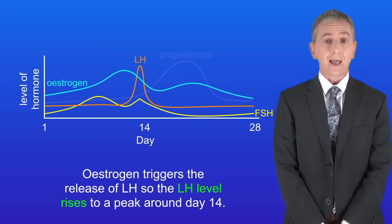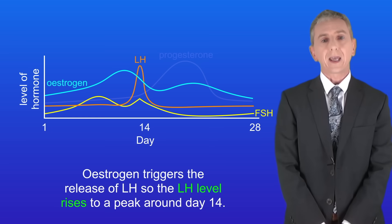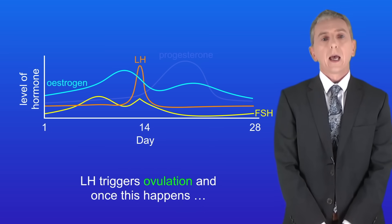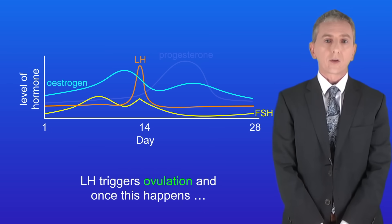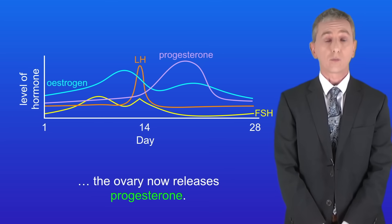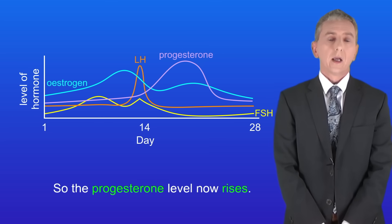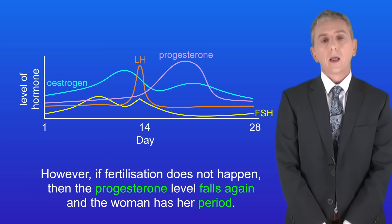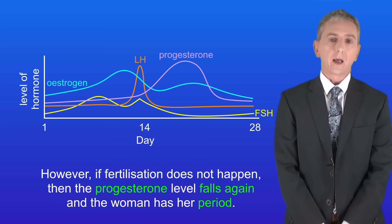Estrogen triggers the release of LH, so the LH level rises to a peak around day 14. LH triggers ovulation and once this happens the ovary now releases progesterone, so the progesterone level rises. However if fertilization does not happen then the progesterone level falls again and the woman has her period.